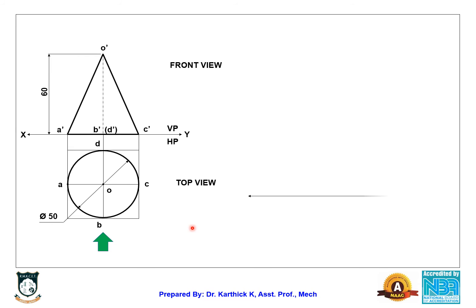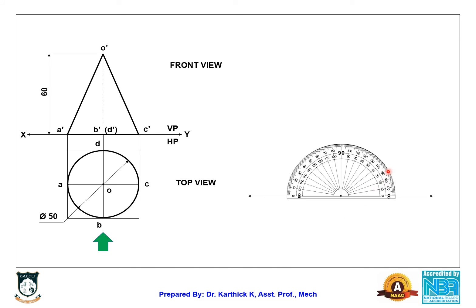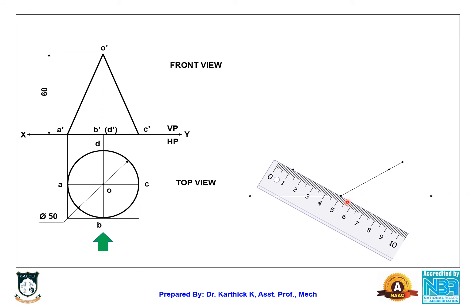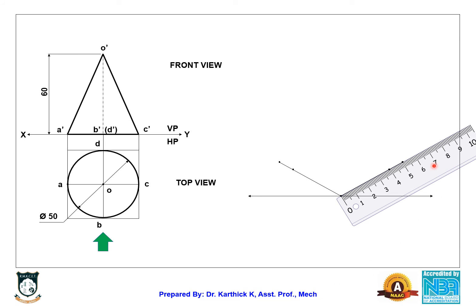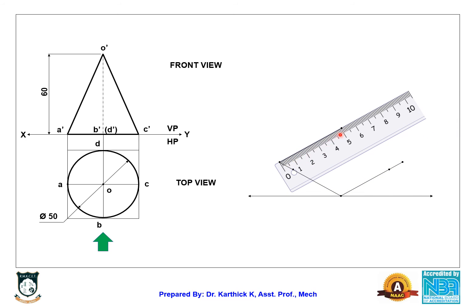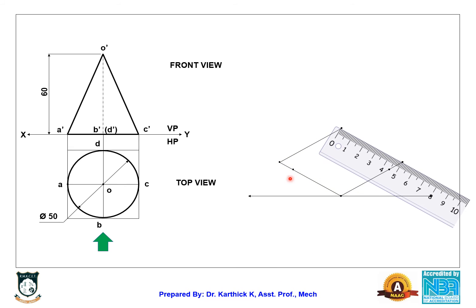Draw another reference line and choose any point on it. Bring your protractor and mark 30 degrees on both sides. Then bring your scale and draw a 50 mm line along one axis, and another 50 mm line along the other. Move your scale parallel to each line to complete all four sides of the isometric box. The box is now complete.